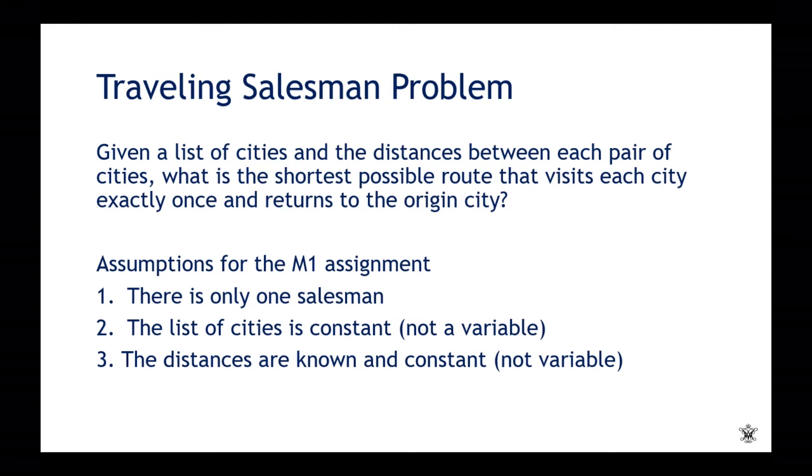I want you to make these assumptions for the Module 1 assignment. We are going to assume that there's only one salesman. We are also going to assume the list of cities is constant. So you don't have to model that as a variable. So let's say we all have five cities, we're not going to change the number of cities. The distances are also known, given and constant, meaning that you don't have to model the distances as variables.